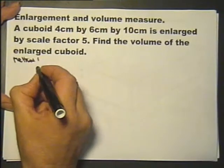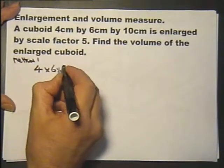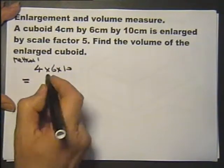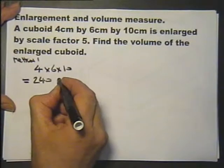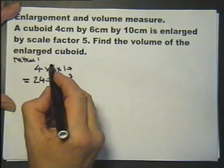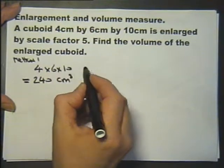The original cuboid is 4 by 6 by 10, so the volume is 4 times 6 is 24, 24 times 10 is 240 cubic centimetres.